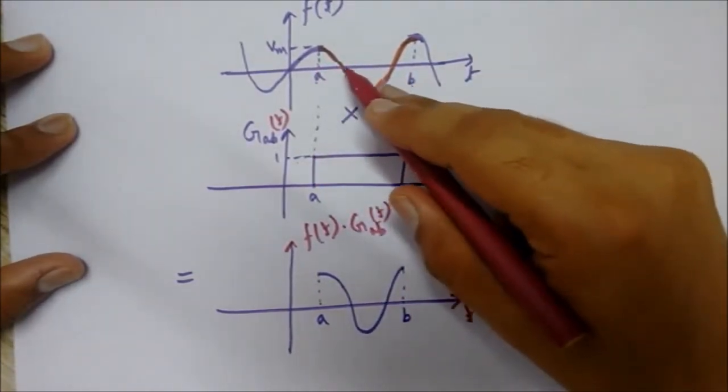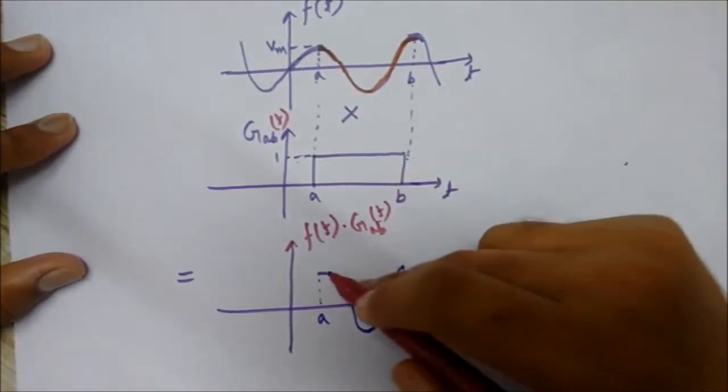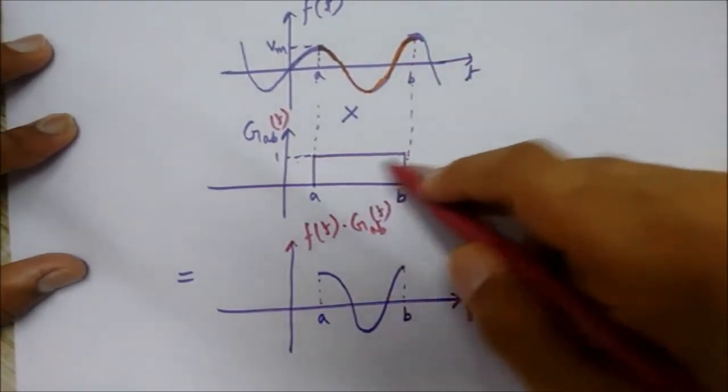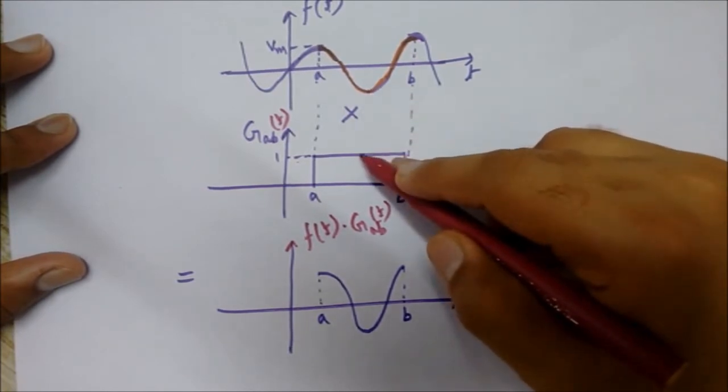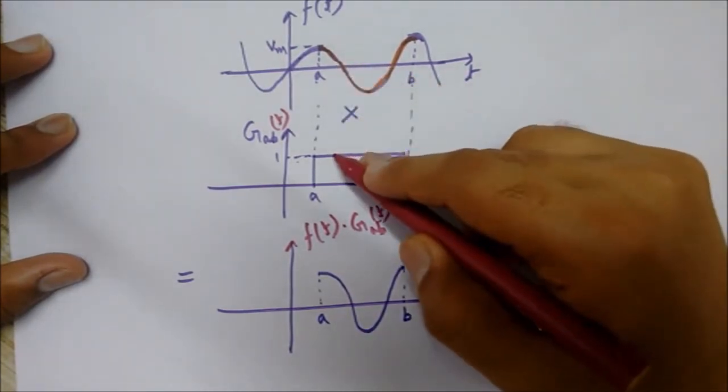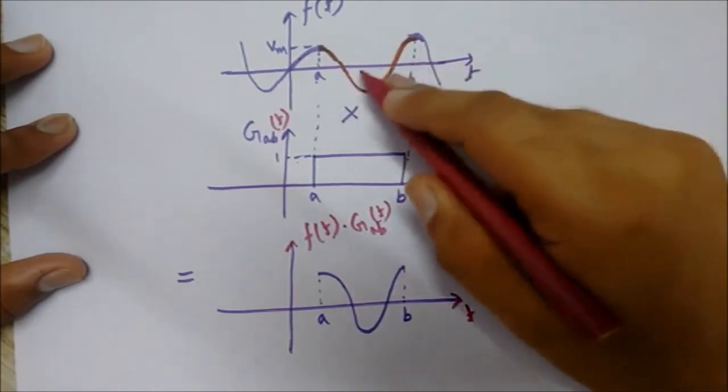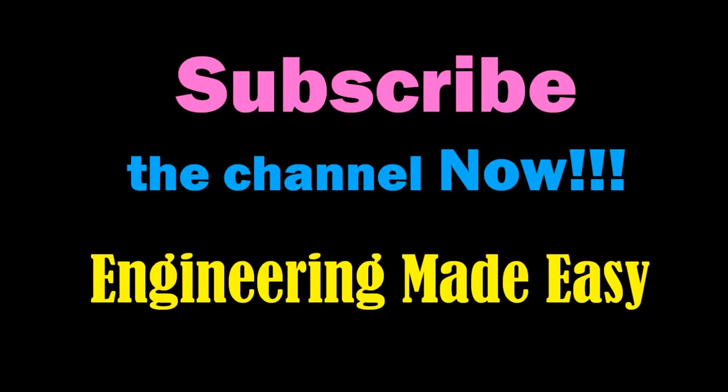...it is multiplied with 1 at every value, so it is not changed. So the shape of this curve remains the same in this a-b interval. Even if it is negative - suppose this is minus 3 - if minus 3 is multiplied by 1, it will give minus 3. If plus 1 is multiplied by plus 1, it will give plus 1. So in the same manner, all the plus and minus values will be retained after multiplication.